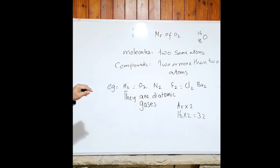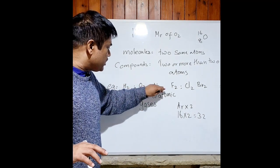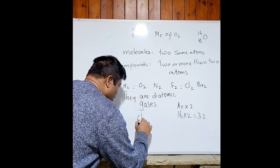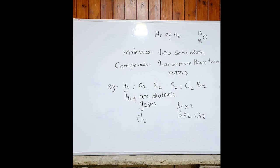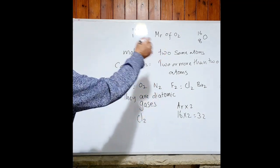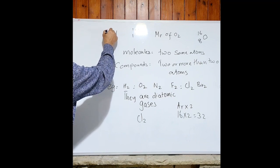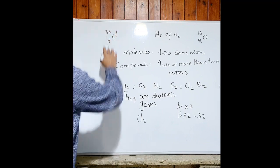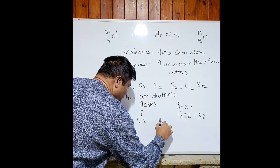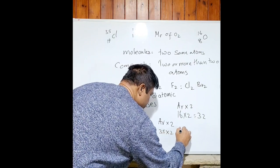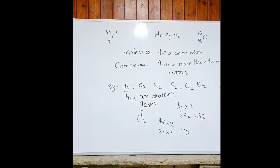Try working out the Mr for the remaining diatomic molecules as homework. Let's do chlorine together. Chlorine has atomic number 17 and AR of 35. So Mr of Cl2 is: 35 times 2 equals 70.